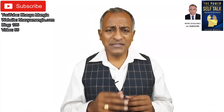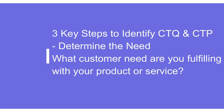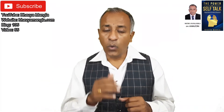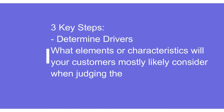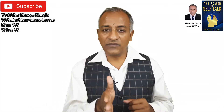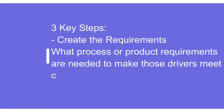There are three key steps in identifying CTQ and CTP and taking action on them. The first step is to identify the need — why we need CTP and CTQ. Once we identify that, the second step is the deliverables: how to identify the key parameters so we can achieve that need. That is where we identify CTQs and CTPs. The third step is what to do — what steps need to be taken to achieve those CTQs and CTPs.